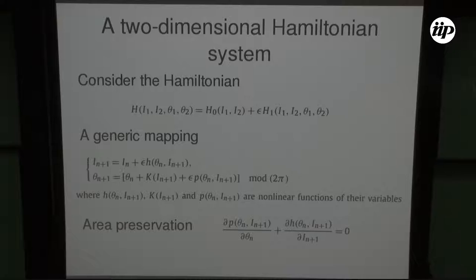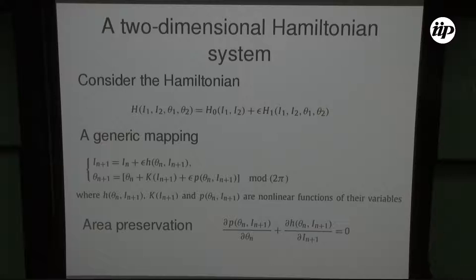I will consider a most generic Hamiltonian system composed of two parts: H₀, the integrable part, which depends only on two dynamical variables, and a perturbation ε·H₁, which depends on all four dynamical variables. When ε = 0 we have an integrable Hamiltonian; when ε ≠ 0, we have a non-integrable one. We want to investigate the chaotic diffusion near this transition from integrability to non-integrability, near ε = 0.